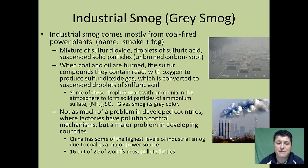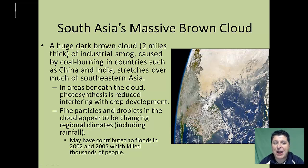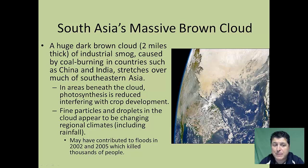China in particular has some of the highest levels of industrial smog due to coal being a major power source, with 16 out of 20 of the world's most polluted cities. On many days, visibility is knocked down to less than 20 feet, and airplanes are grounded due to the dense smog. A massive brown cloud visible from outer space covers much of China and India. Beneath the cloud, photosynthesis is reduced, interfering with crop development. The fine particles act as condensation nuclei for cloud formation and may be modifying local climates — some scientists believe this cloud contributed to major floods in 2002 and 2005.